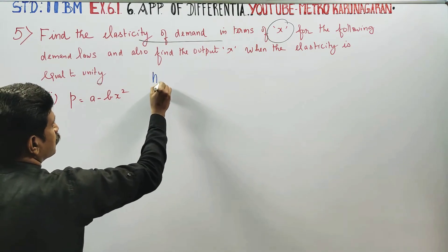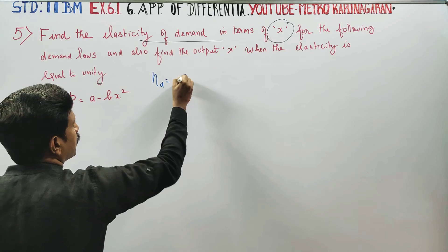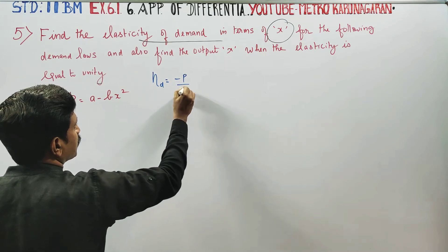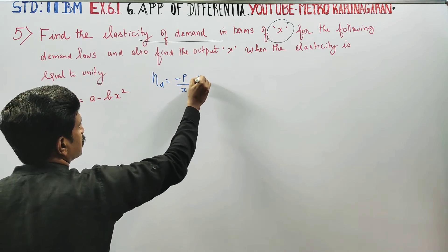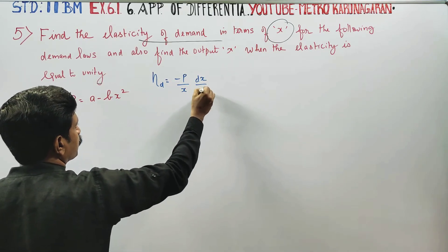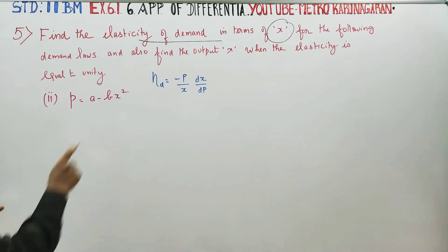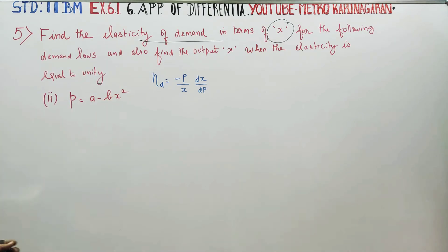Elasticity of demand has the formula: minus P by x, times dx by dp. If you do differentiation, you will have the elasticity of demand.